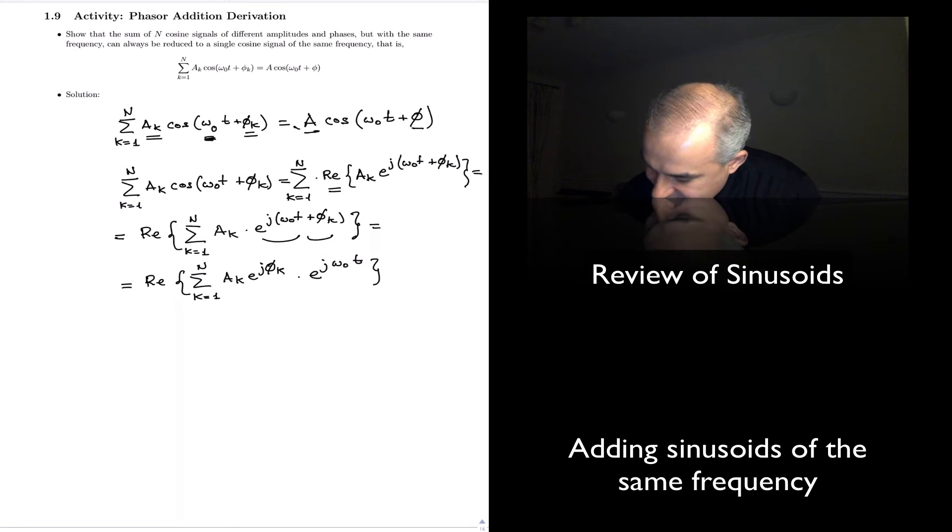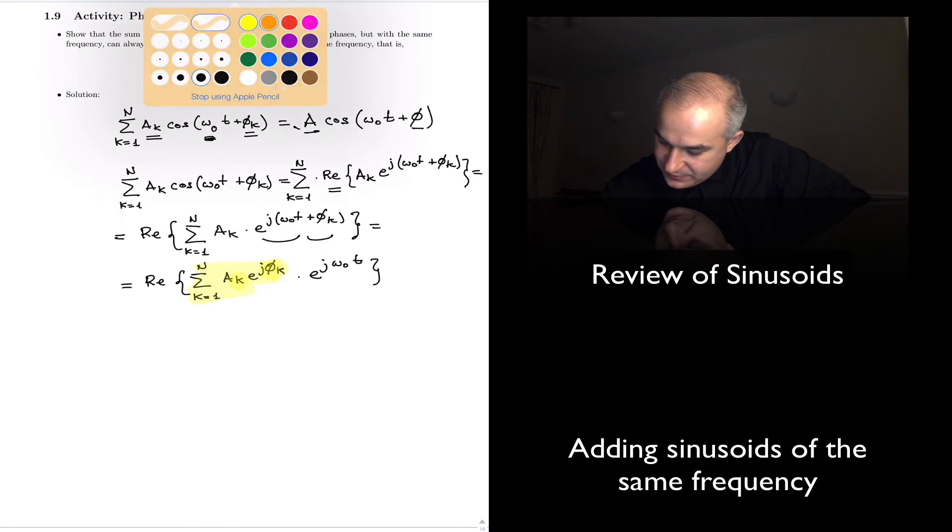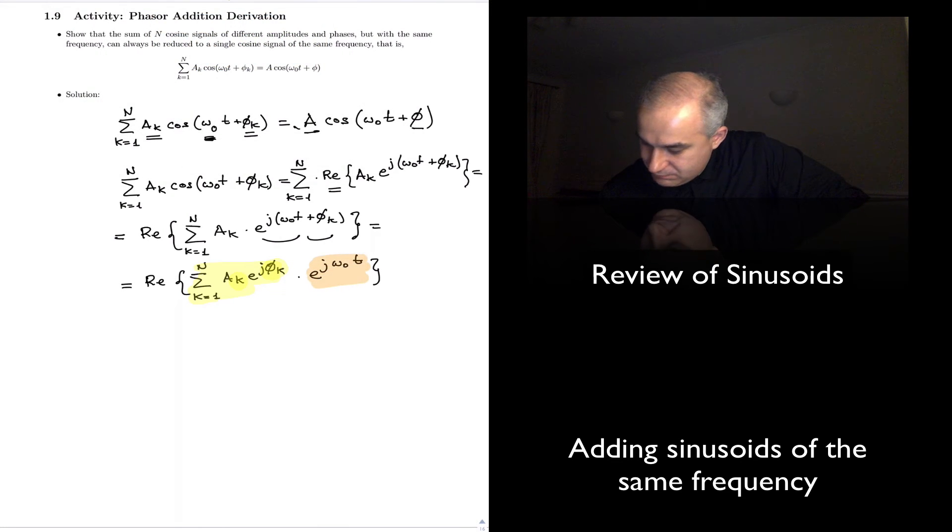Notice, this part, A_k and the phase k, does depend on the summatory, but this other does not have a k anywhere. It's not going to change,